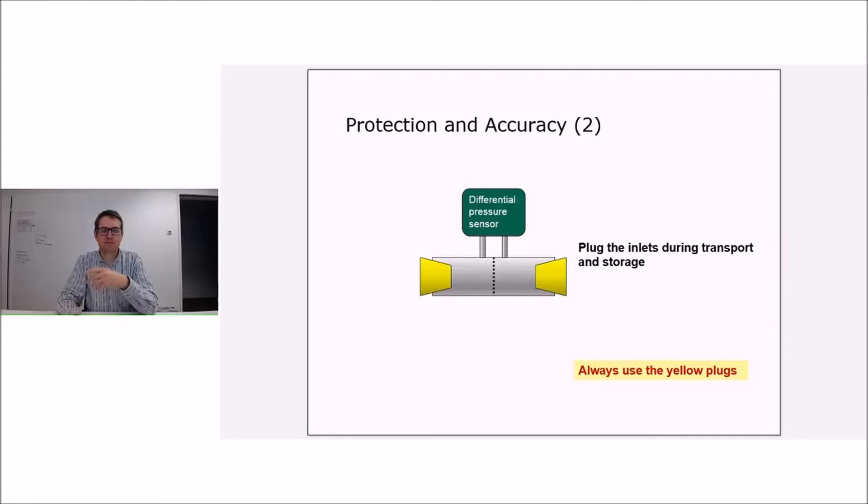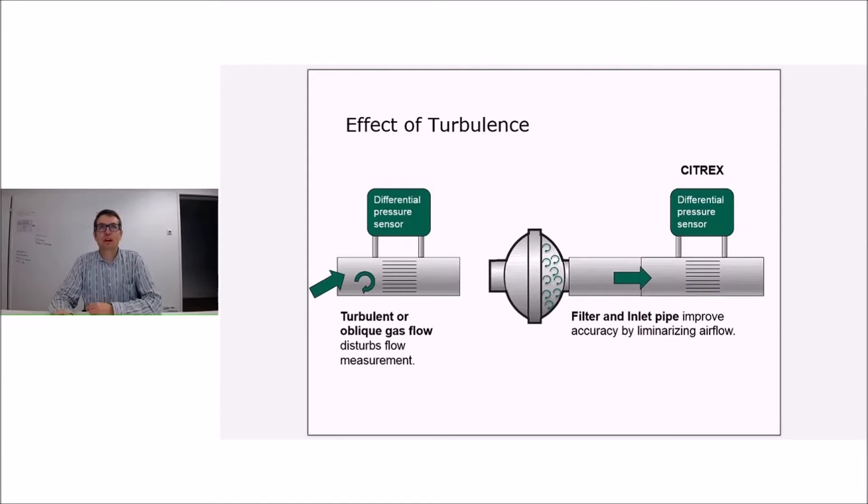You take the PF300 into operation, let it warm up, and then do a zero which basically zeros all the pressure and differential pressure sensors. But when you do that while your caps are on, you might have a pressure in here. As soon as you have your caps open, all your measurements are going to be completely wrong. Another effect which is against the accuracy is turbulence.